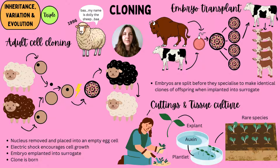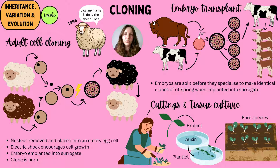If you're a triple scientist, you need to know about cloning. There are two types in animals. The first is embryo transplant: egg and sperm cells are taken from two individuals of the same species and fused together, similar to IVF. The embryo is then split into smaller sections before specialization occurs and implanted into individual surrogate mothers. Each produces an offspring — all identical clones of one another with the desired characteristics, though not clones of the parents.